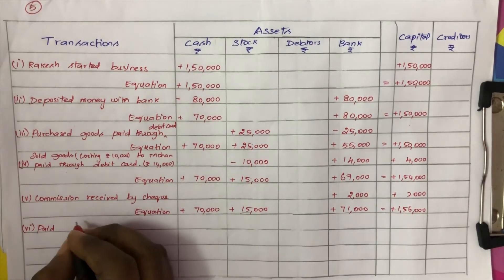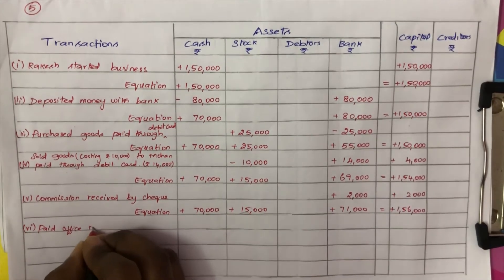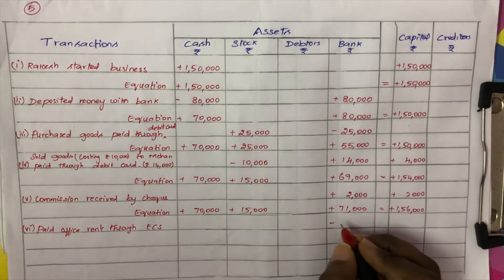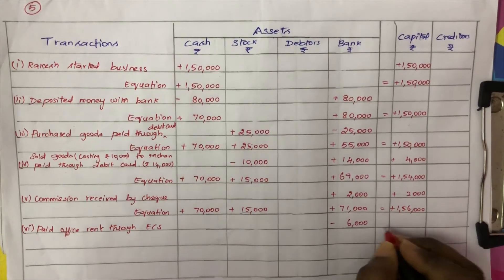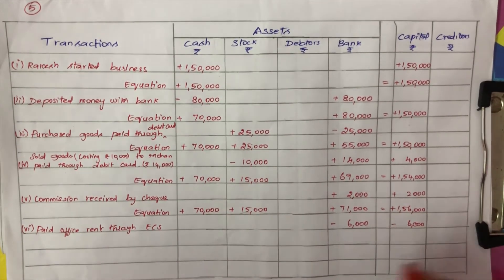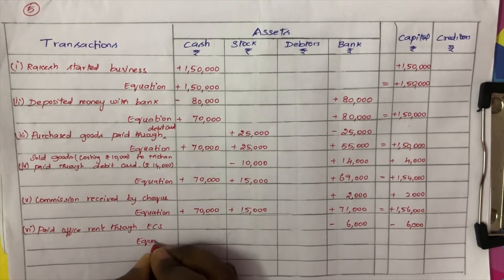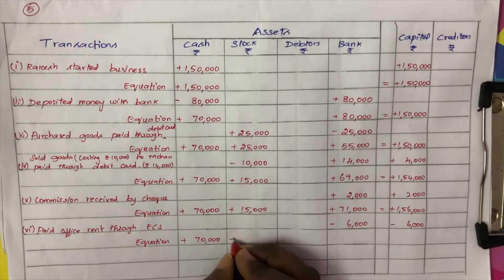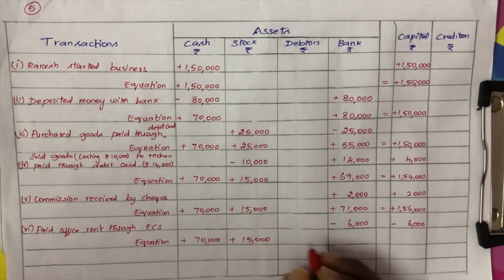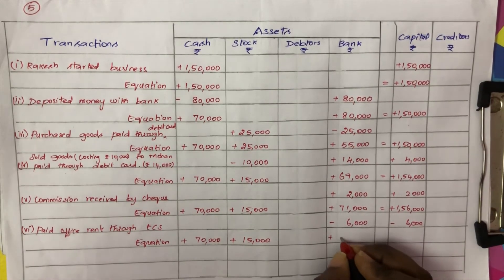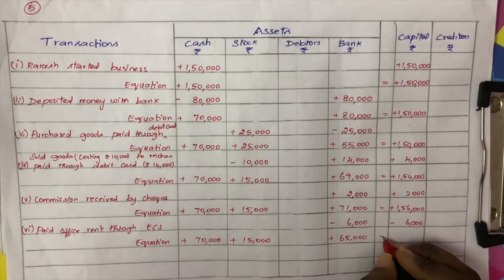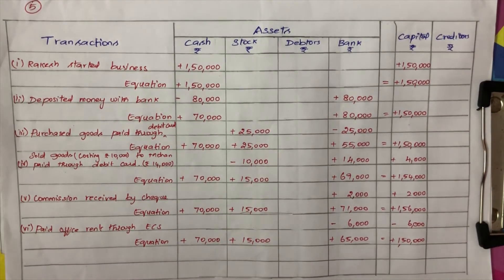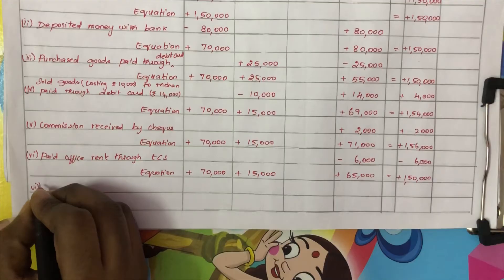Sixth transaction: paid office rent through ECS Rs. 6,000. Bank decreases by Rs. 6,000 and capital decreases by Rs. 6,000. Updated equation: cash Rs. 70,000, stock Rs. 15,000, bank Rs. 65,000, equal to capital Rs. 1,50,000.